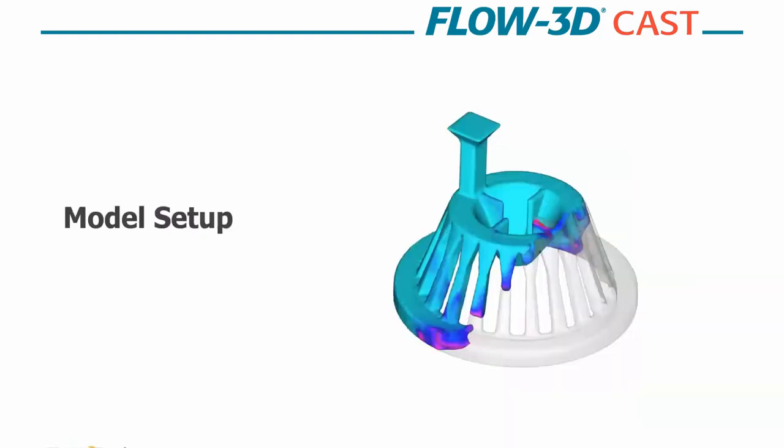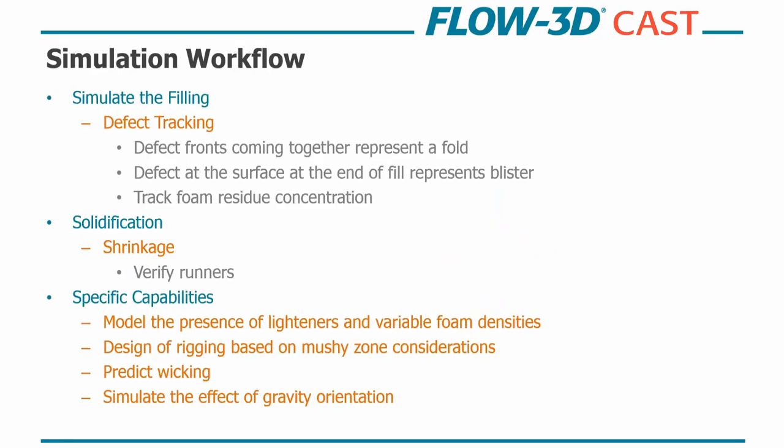So let's talk a little bit about model setup. Now I'm going to go briefly through the components and sort of our prescribed workflow that we like to use here when doing a lost foam casting. And if you have any questions or want to see more, I'm happy to run you through more particulars of the user interface, maybe some of the reasoning on why I set things up this way. If you have any comments or want to see some different solutions to these problems, please drop me a line. I'd love to get a discussion started. So the simulation workflow that we like to use is, first, we simulate the filling. And this is where we track most of our defects. So we're looking for defect fronts coming together, and that's going to represent a fold in the part. We're looking at defects at the surface, at the end of the filling. So that's going to represent a blister. And then we're also going to track the foam residue concentration.